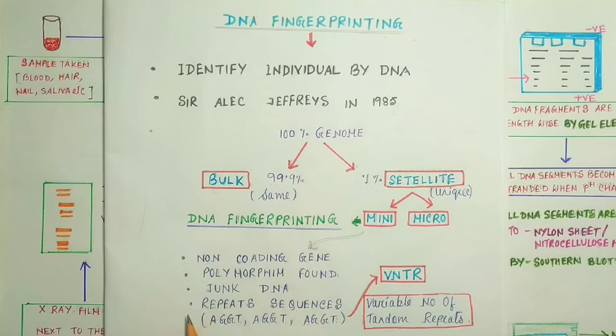But these repeat sequences are different in each individual, and the arrangement is also unique in each individual. These short repeats are known as VNTR, means variable number of tandem repeats.